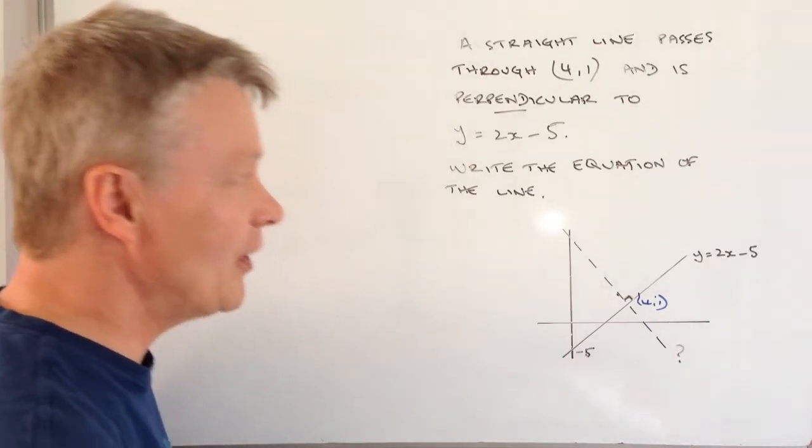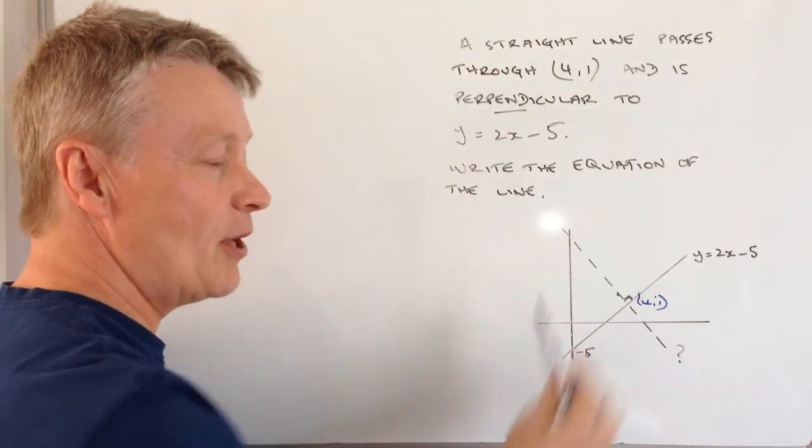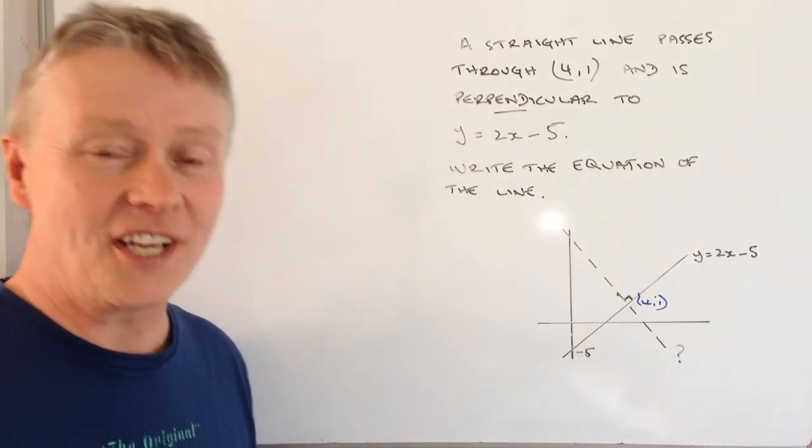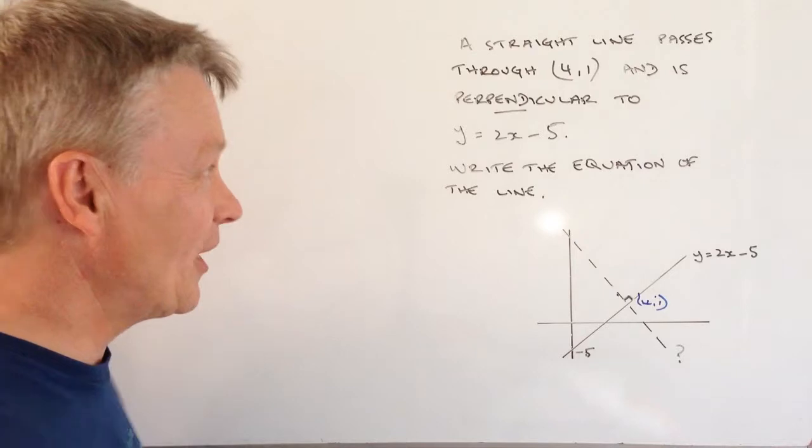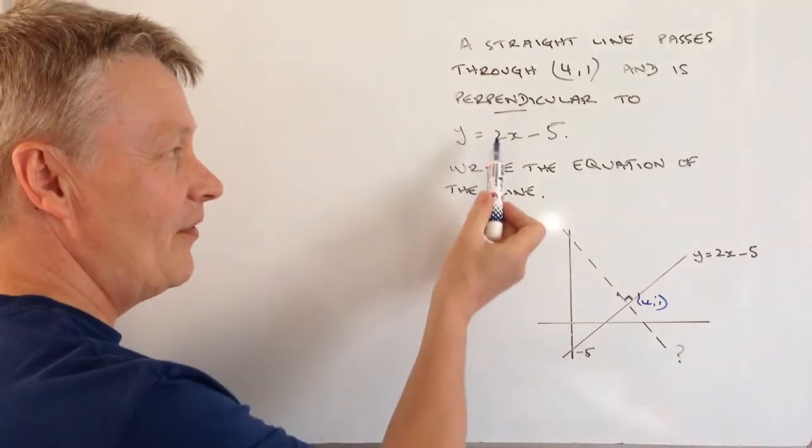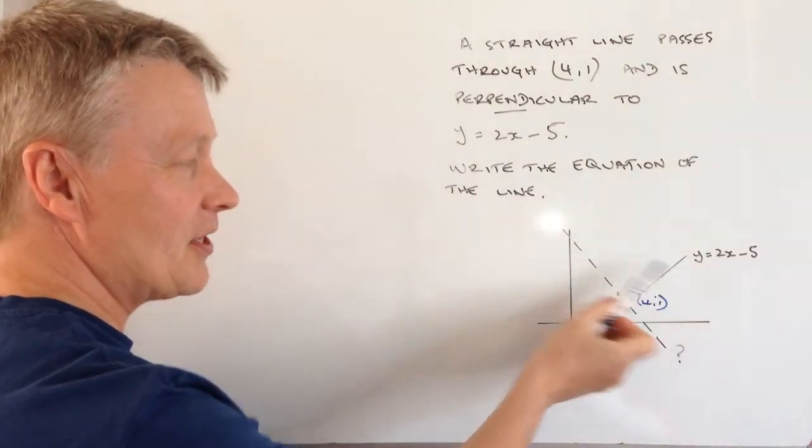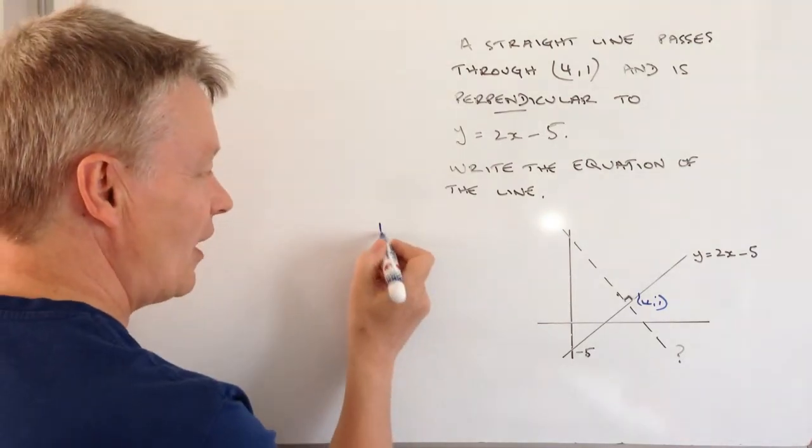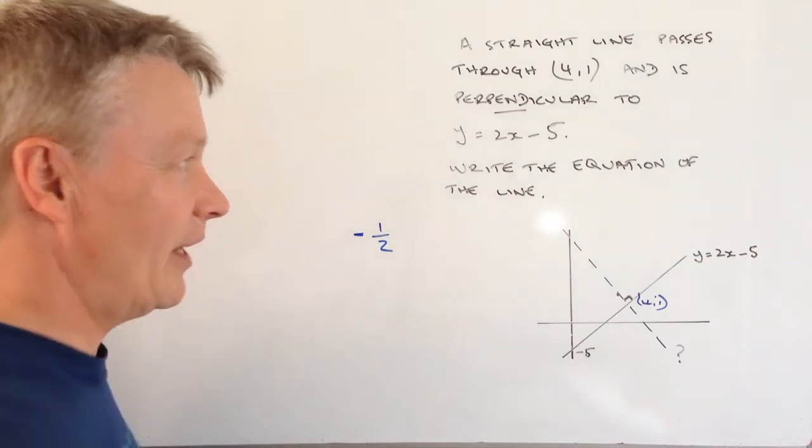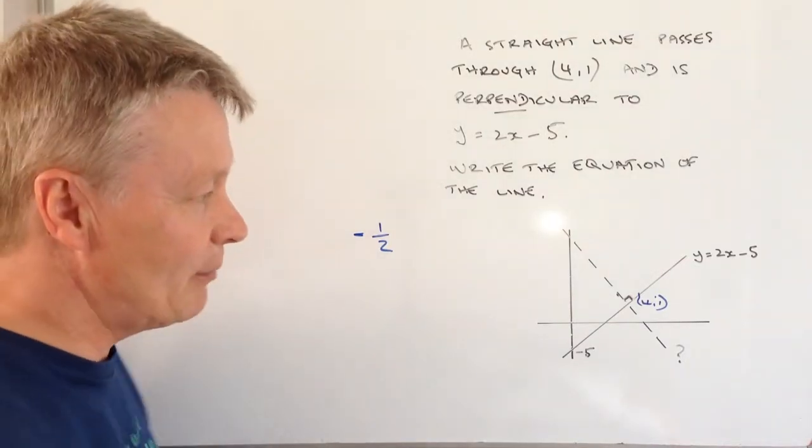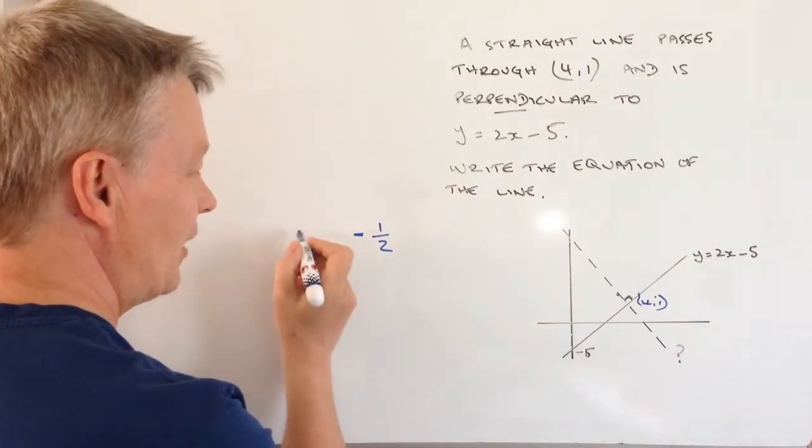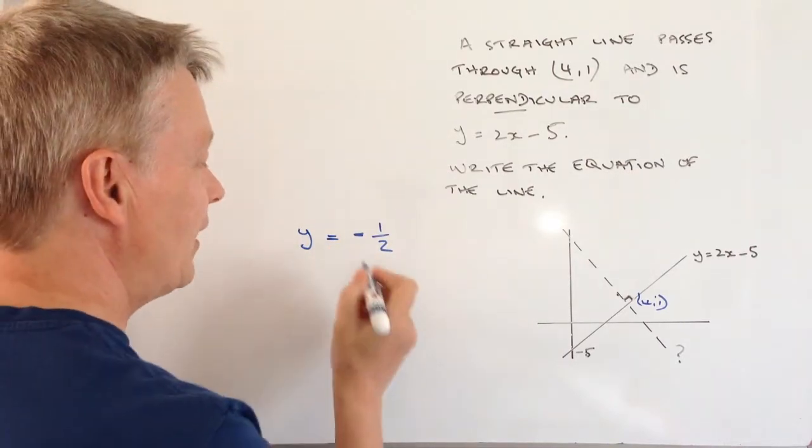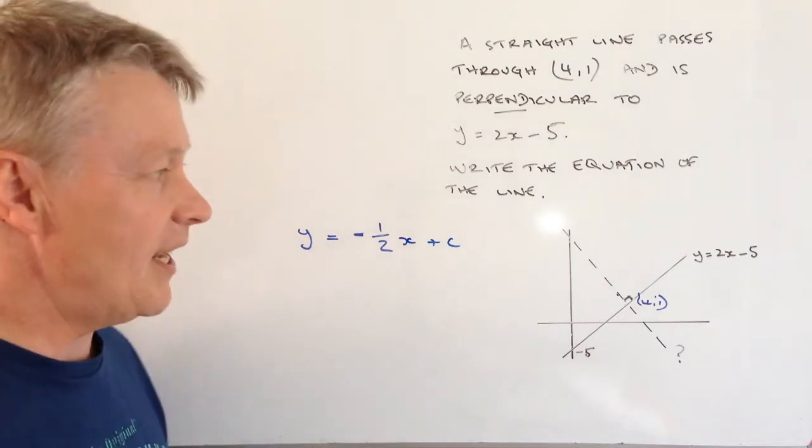A couple of things we need to be aware of. The first thing is that when you've got a perpendicular line, the gradient is the negative reciprocal. What we mean by that is this is the gradient of this line, the negative reciprocal of that - well, the reciprocal is a half and the negative reciprocal is minus a half. So the perpendicular line's general form will be y = -1/2x + c.